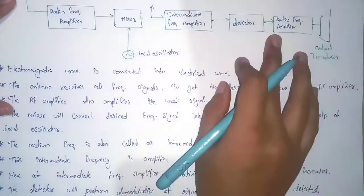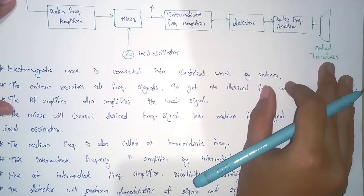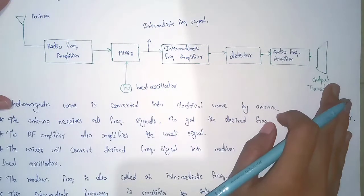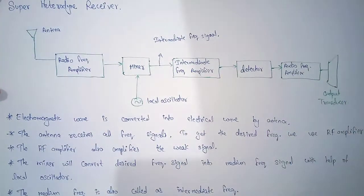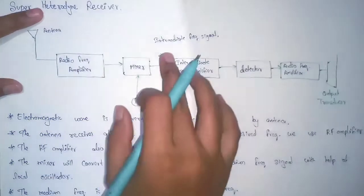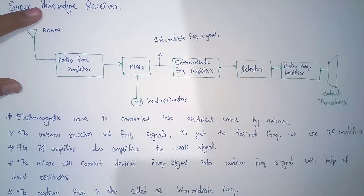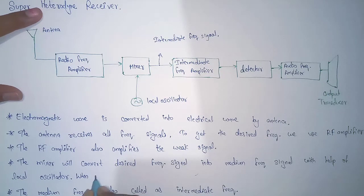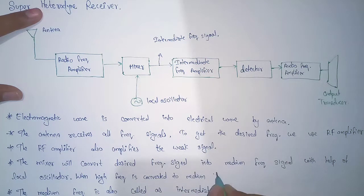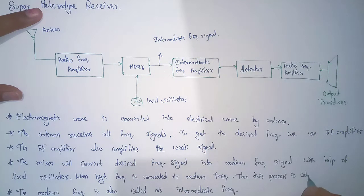The original signal is sent to the output transducer. If at the input we send a message signal — like a voice signal, email, or anything — then the same thing we will get at the output transducer. Now, why is it called a super heterodyne receiver? The radio frequency amplifier and the local oscillator generate the intermediate frequency. When high frequency is converted to medium frequency, this process is called heterodyne — that's why this receiver is called a super heterodyne receiver.